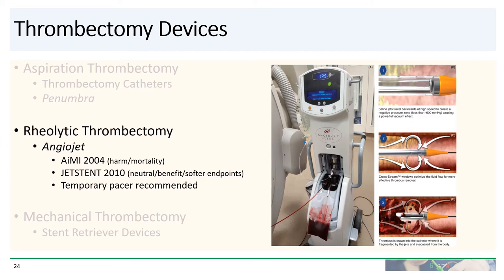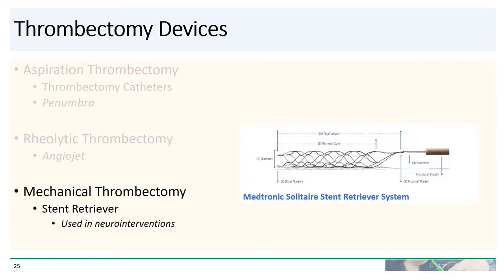In the AIMI trial from 2004, there was actually harm and increased mortality associated with the AngioJet device. JetStent, done a few years later, was more neutral, showing some benefit for ST segment resolution but no significant benefit for scar size reduction. If you are going to use AngioJet, we typically recommend placing a temporary pacer prior to the procedure, as patients often get quite bradycardic. Lastly, you may consider mechanical thrombectomy and stent retriever devices — these are mostly used in neuro-interventions, although there have been reports of the Medtronic Solitaire stent retriever being used off-label in the coronary artery.